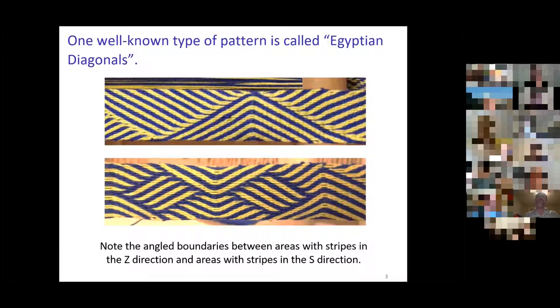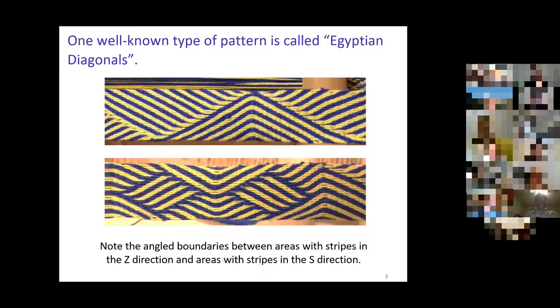With more research, probably not actually, but tablet weavers still call it Egyptian Diagonals. There are some characteristics: bold diagonal stripes and angled boundaries between the stripes. I'm going to refer to the Z direction and the S direction for the different diagonals. If you think about the letter Z, it's got that crossbar going one way, and the letter S has that crossbar going the other way. That's a convenient way that fiber people use to talk about those two different directions.